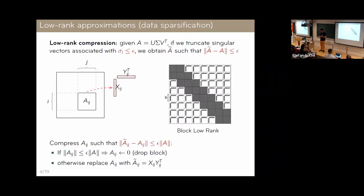The other approximation is low-rank compression. If we see dropping as sparsification — data sparsification — the matrix need not be sparse; it can be dense but still contain a lot of redundant data. If we look at the singular value decomposition of the matrix and set a threshold epsilon, we can truncate singular vectors associated with small singular values and still get something quite accurate.